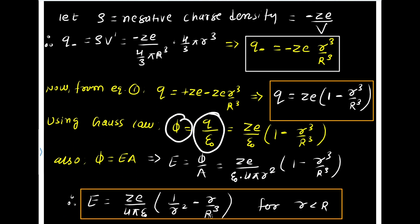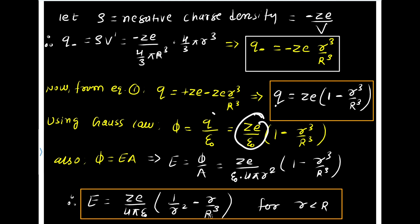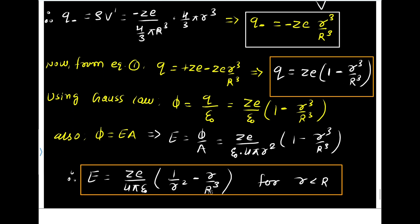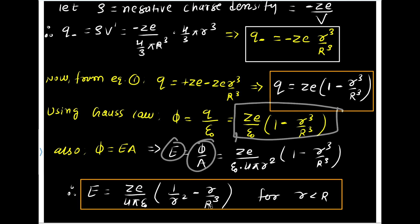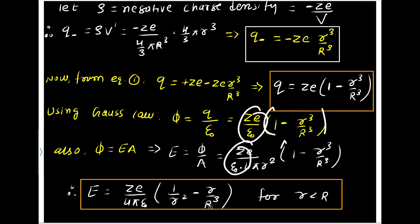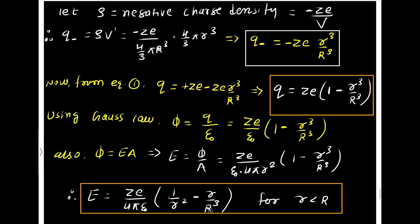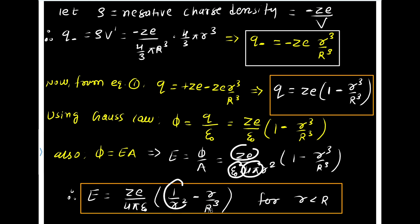From Gauss's law, flux equals Q by epsilon naught. The charge enclosed is Ze times (1 minus r cubed by R cubed), so flux equals Ze by epsilon naught times (1 minus r cubed by R cubed). Since electric flux phi equals E into A, E equals phi by A. Substituting and dividing by the area 4 pi r squared, and simplifying, the final answer is: E equals Ze by 4 pi epsilon naught times (1/r squared minus r/R cubed) for the point r less than R.